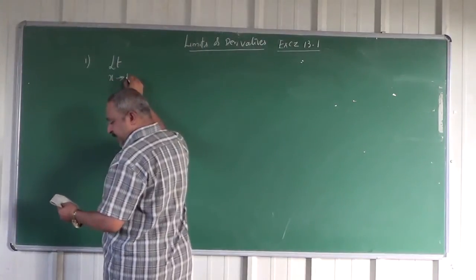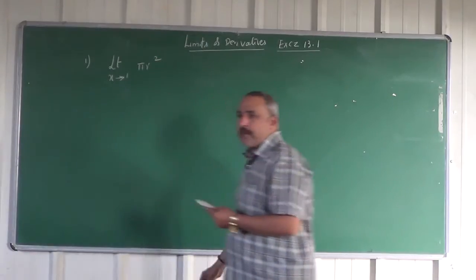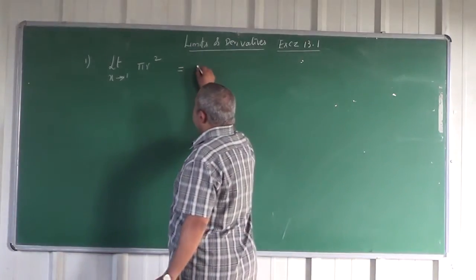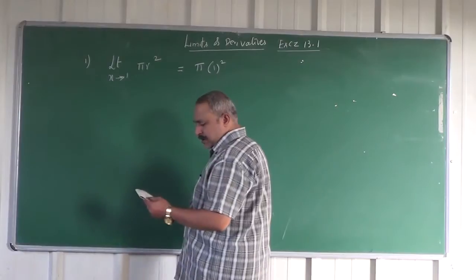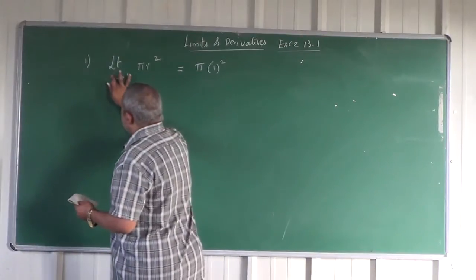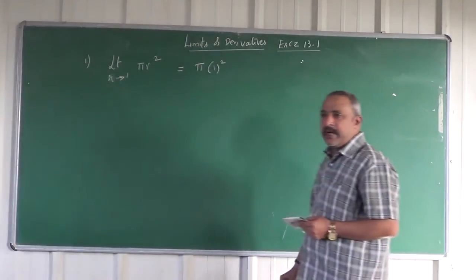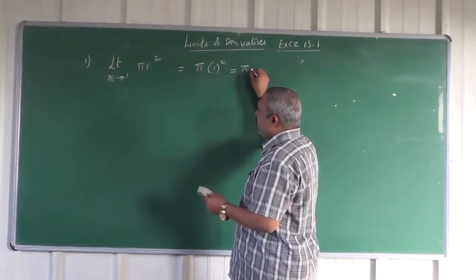Limit extending to 1 of π/R². Directly substituting the limit, this is π times 1 squared. The limit R tends to 1 of π/R², so π into 1 squared. Answer is π.